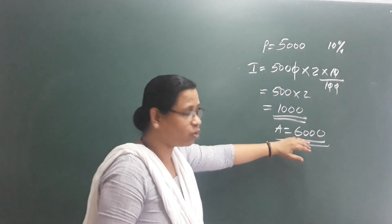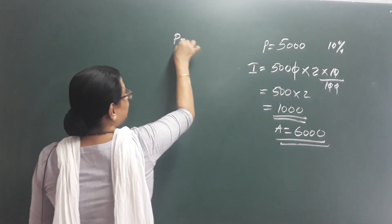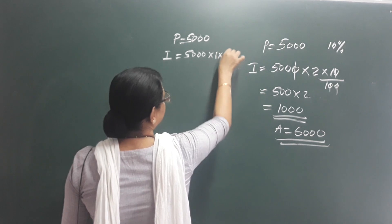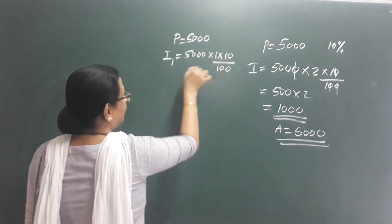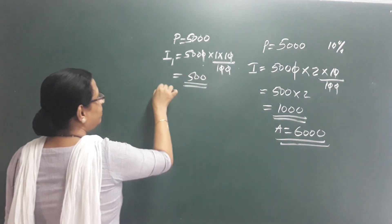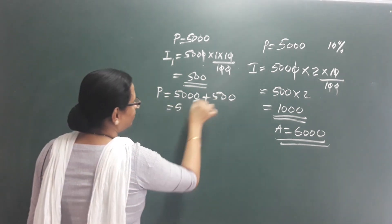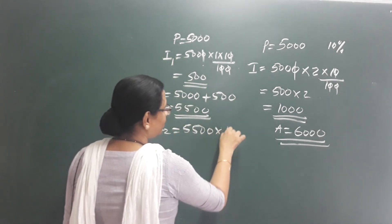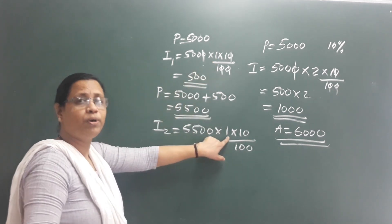Now this amount is compounded over two years. The principal amount is 5,000. In the first year, interest I1 is 5,000 into 1 into 10 by 100, which gives us 500 rupees in the first year. In the second year, the principal amount becomes 5,500 rupees. The interest for the second year is 10 percent. For compound interest, once interest is earned, we add it to the principal amount.